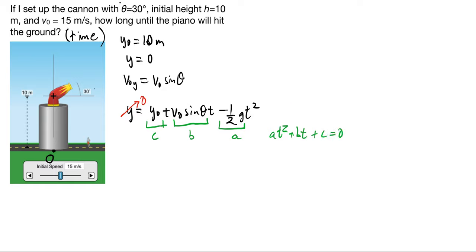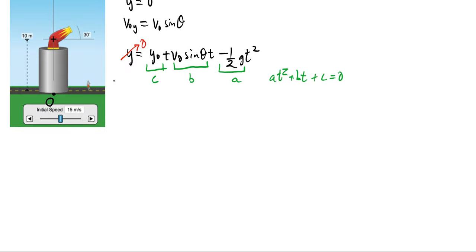And once I do that, I get my regular quadratic expression, where I can say negative b, well, b is this v-naught sine theta, so I say that the time is going to be minus v-naught sine theta plus or minus square root of v-naught squared sine squared theta minus 4AC, so that's minus 4 times a is the minus one-half g.